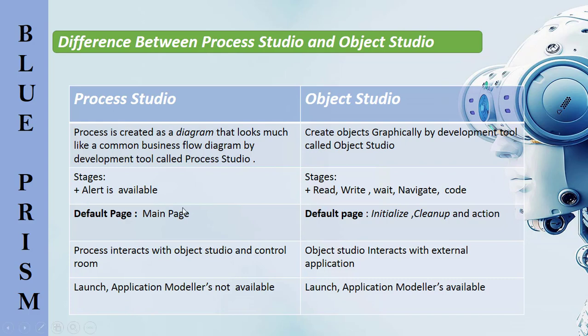In Process Studio, along with multiple stages, alert is available. Whereas in Object Studio, we don't find alert.